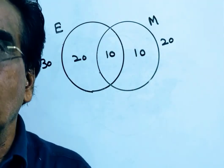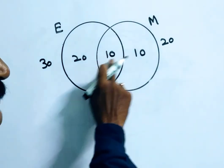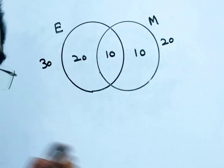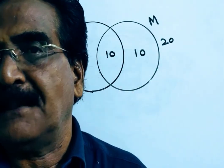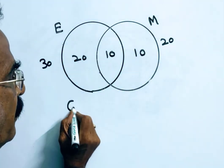So now total students failed, total percent failed: 20 plus 10 plus 10 equals 40 percent failed. 40 percent failed means 60 percent passed.